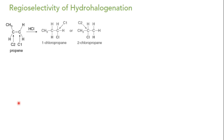With an unsymmetrical alkene, HX can add to the double bond to give two constitutional isomers. For example, hydrogen chloride addition to propene can form 1-chloropropane if H adds to carbon 2 and chlorine adds to carbon 1. Alternatively, it may form 2-chloropropane by addition of hydrogen on carbon 1 and chlorine on carbon 2. Experimentally, in this electrophilic addition, 2-chloropropane was found to be the only product formed.